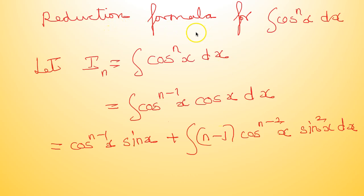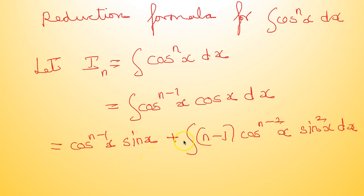Now we come to the reduction formula for integral cos raised to nx dx. Let I_n = integral cos raised to nx dx = integral cos raised to (n−1)x · cos x dx. Using integration by parts: cos^(n−1)x · sin x minus integral of [derivative of cos^(n−1)x · sin x dx], where derivative of cos^(n−1)x is −(n−1)·cos^(n−2)x · sin x, giving a plus, so we get sin²x dx.